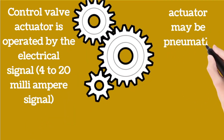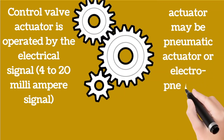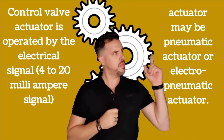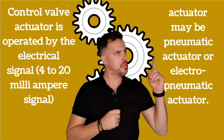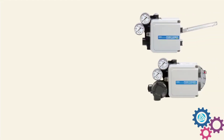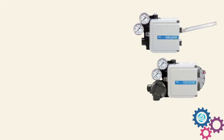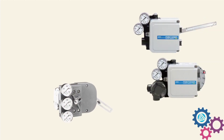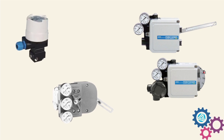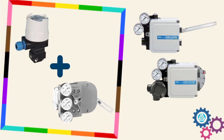Control valve actuators are the pneumatic actuator and the electropneumatic actuator. In the right side image, the electropneumatic actuator is shown, and in the left side image, the pneumatic actuator is shown. Remember one point: a pneumatic actuator is always used with an I2P converter.